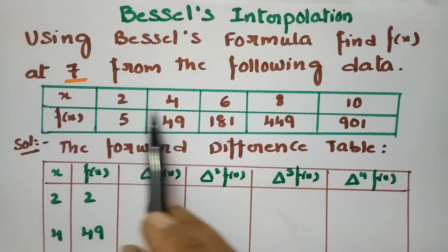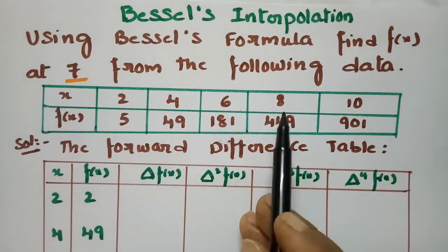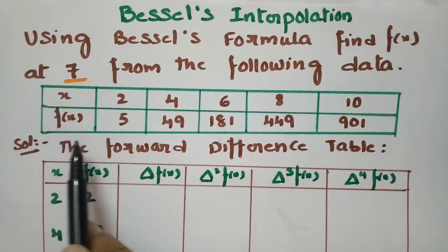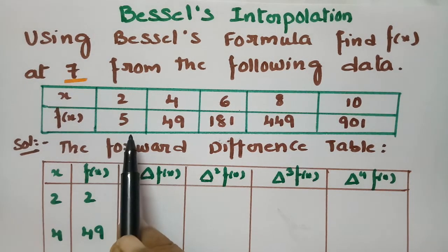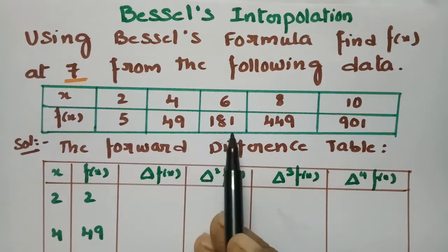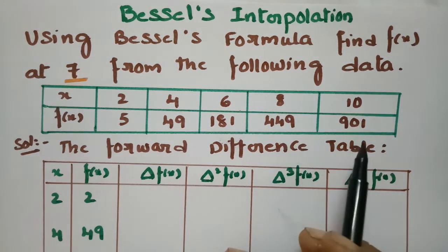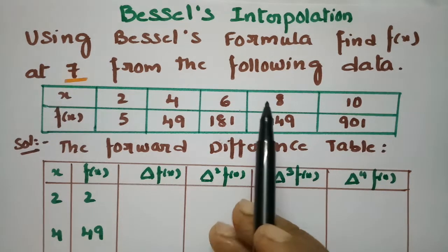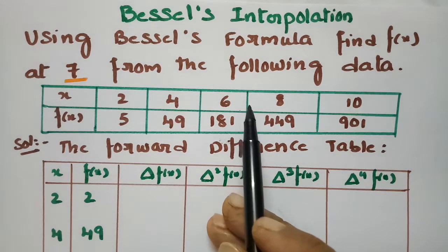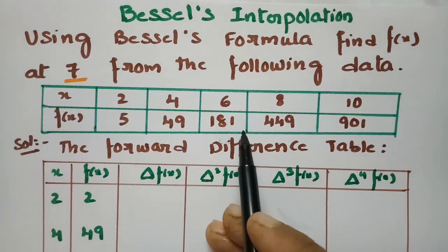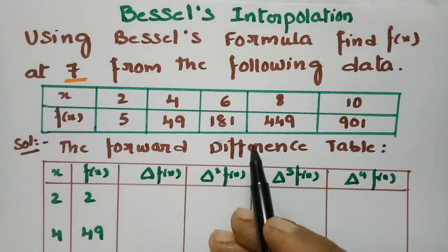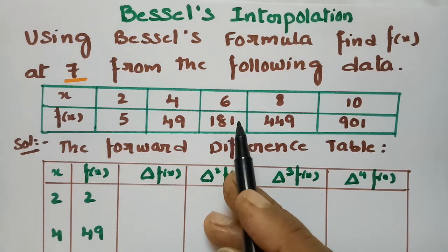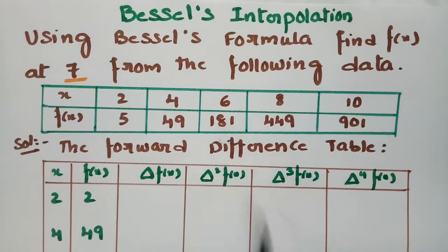The x values given are 2, 4, 6, 8, 10 and the corresponding f(x) values are 5, 49, 181, 449, and 901. We have to find the value of f(x) when x is equal to 7 using Bessel's interpolation formula.